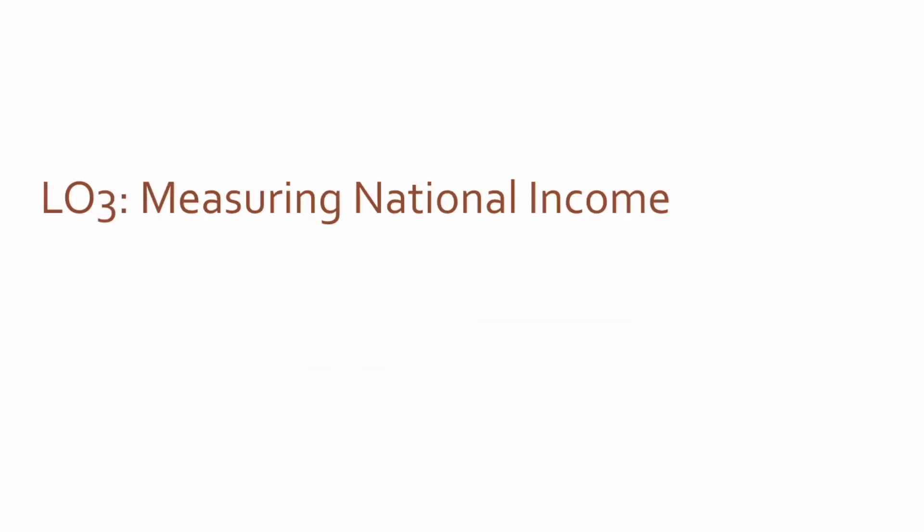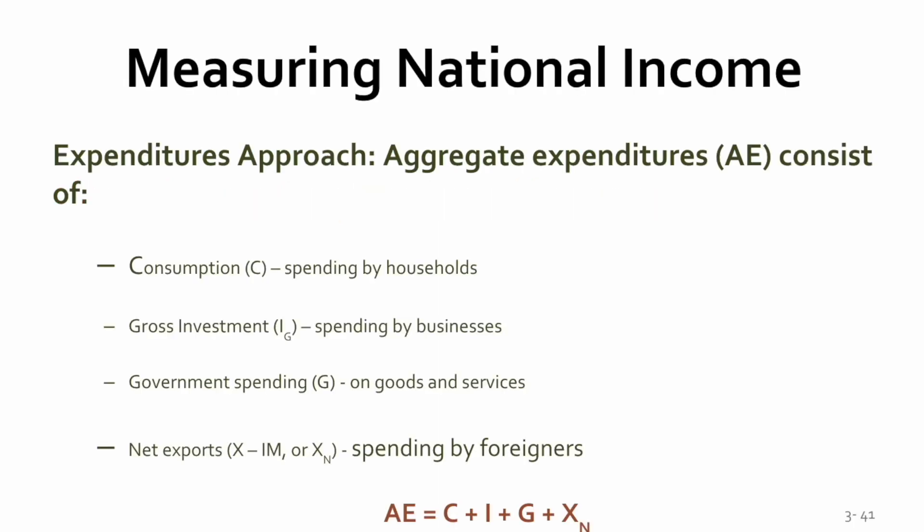So why are we bothering measuring national income? If you're the government, you want to know how well the economy is doing. Because if the economy is slowing down, government can free up money and put money into the economy to get it to speed back up again, bringing it back to equilibrium. If the economy is doing too well — too many dollars chasing too few goods — it will tend to drive up prices. What government can do in that case is increase taxes or reduce spending, reducing the amount of money and slowing down the economy. So national income is really a leading indicator to tell government whether things are going well or not. So we've got to be able to measure national income.